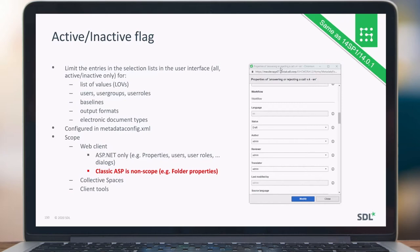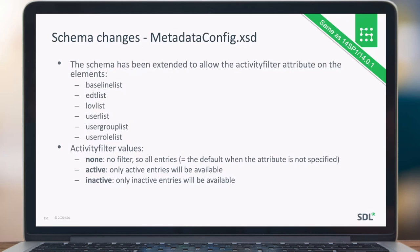The scope for the web client is ASP.NET only — the classic ASP pages we currently have are not in scope, so folder properties won't respect the flag. Collective Spaces and the client tools are aware of the active/inactive flag. The schema has been extended to allow the 'activityFilter' attribute, with values of 'none', 'active', or 'inactive'. With 'active', only active entries will be available; with 'inactive', only inactive entries are shown; and 'none' shows all entries.